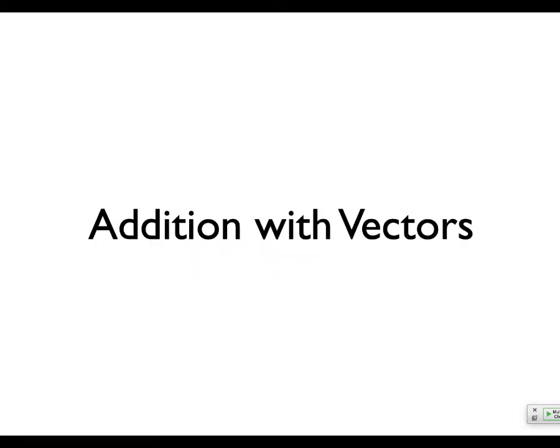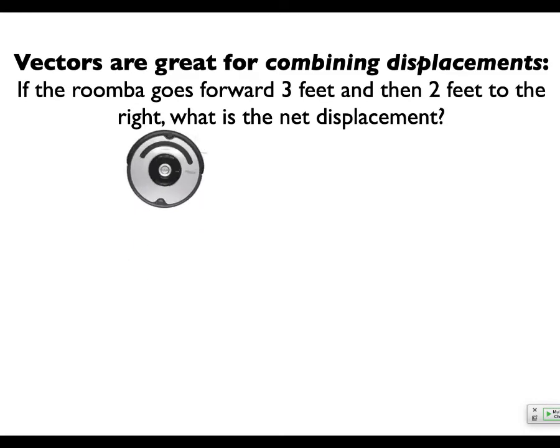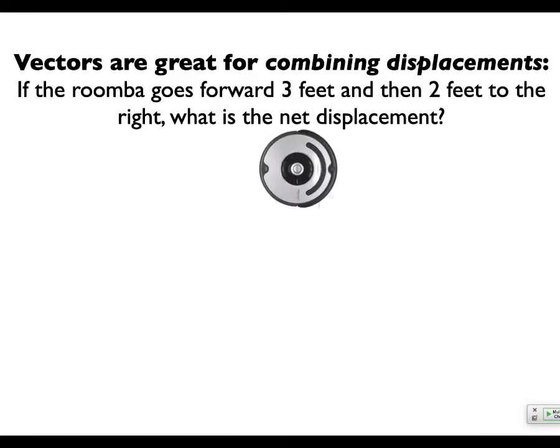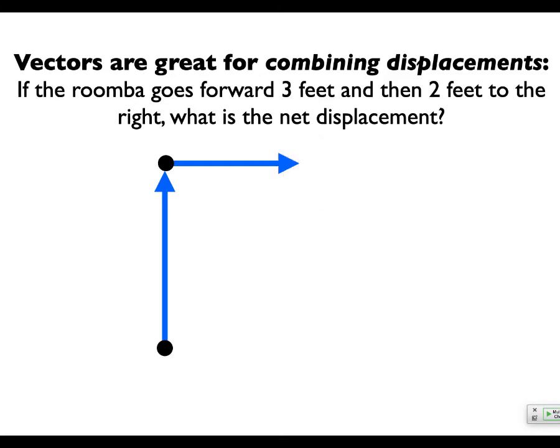Vectors are great for combining something we call a displacement. A displacement is really a final position minus an initial position, and that's how you know what the direction is. So if you have a Roomba and it goes like this, its path looks like a series of vectors, but its displacement is actually just its final position minus its initial position. Displacement is not quite the same as distance traveled — it's just connecting the dots between your final spot and your initial spot.